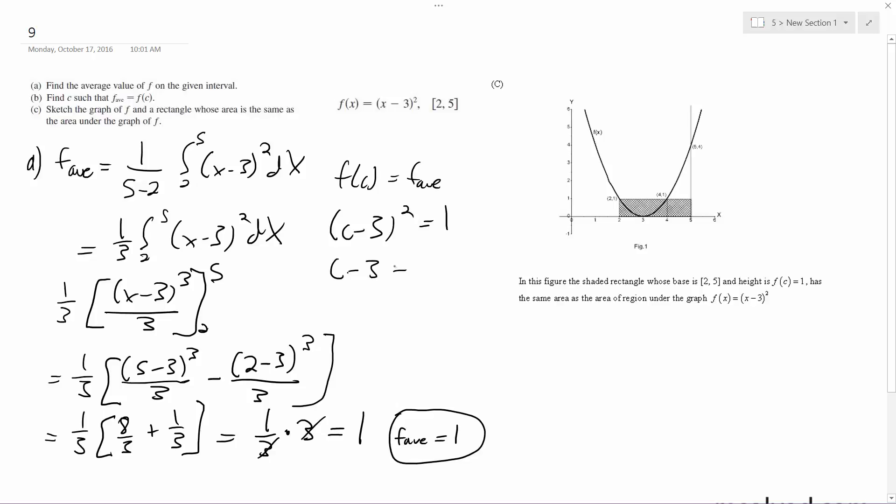C minus three is equal to plus or minus one, so you took the square root. So c is going to be either equal to two or four.